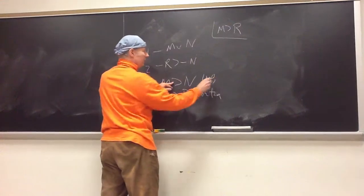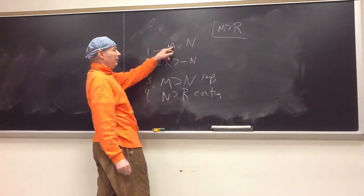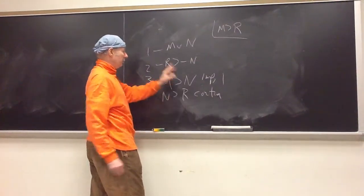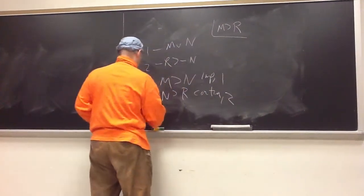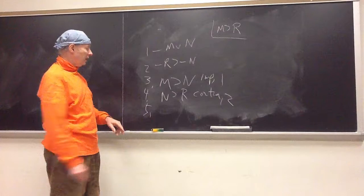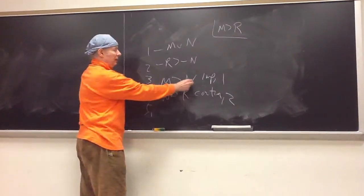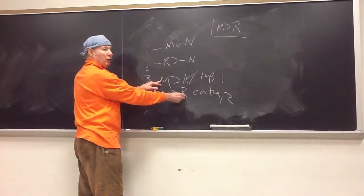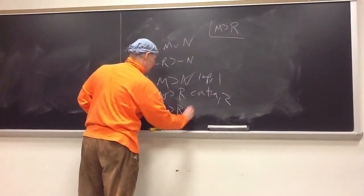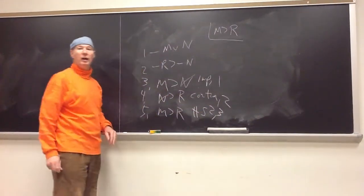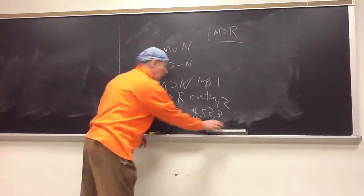I IMP implication line one. And here I contrapose line two. And now I'm ready to do HS because the left hand side of this horseshoe and the right hand side of that are the same. So, I can create this new horseshoe which is the one we want by HS on two and three.